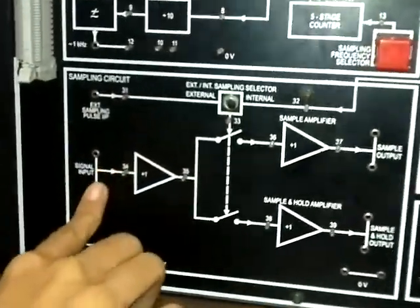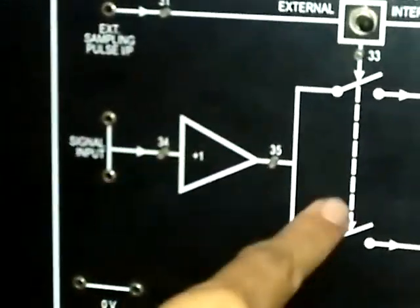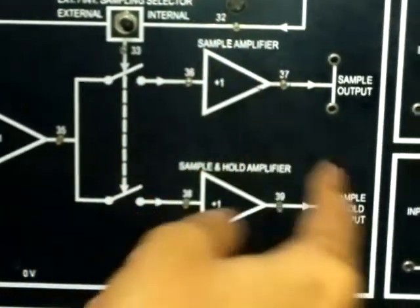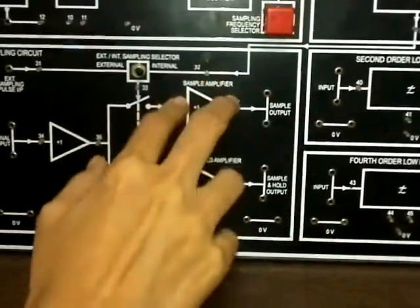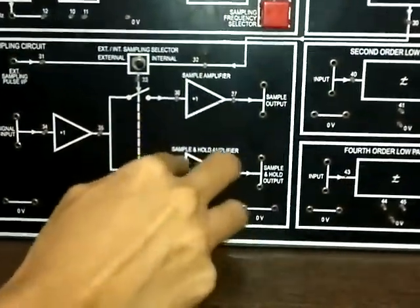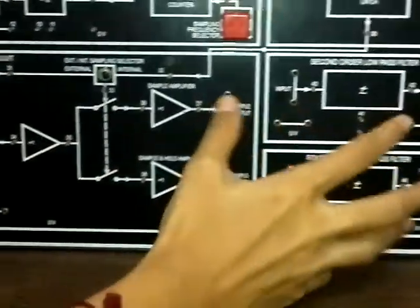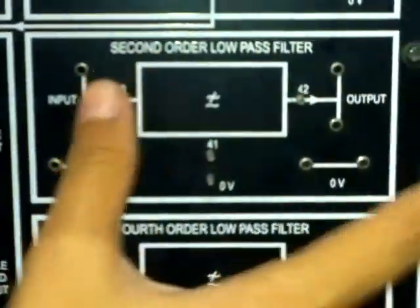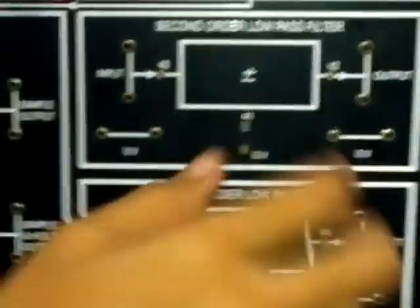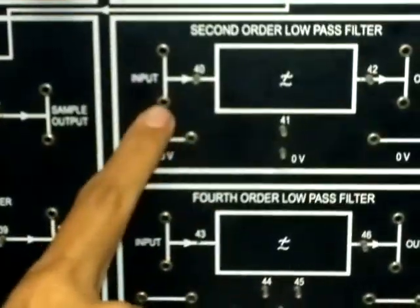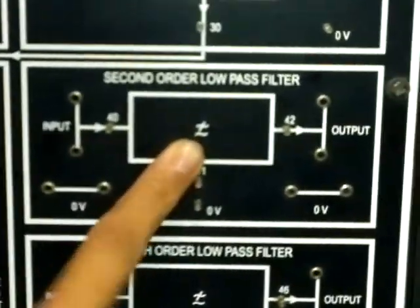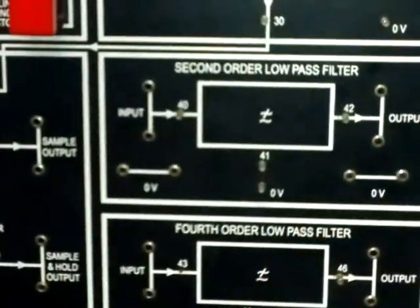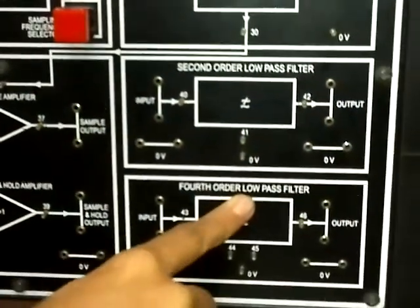From here we can put signal input and connect it to a sample amplifier, and then we can change it to a sample-and-hold amplifier. The main part is the second order low pass filter, which plays a major role. This is an input signal, this is the system, and this is the output. This is a second order low pass filter and this one is a fourth order low pass filter.